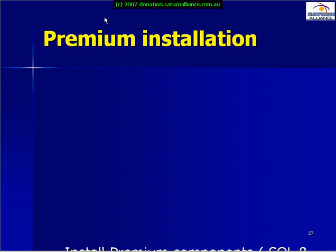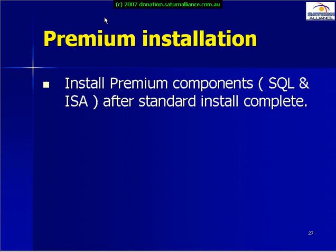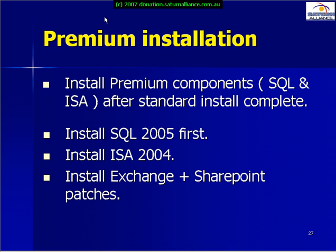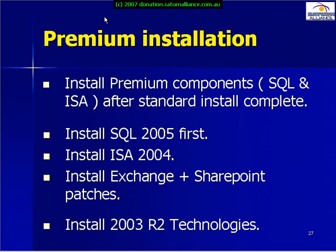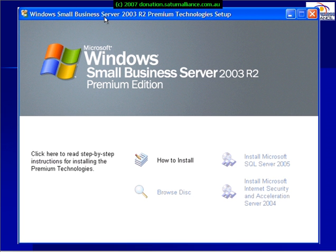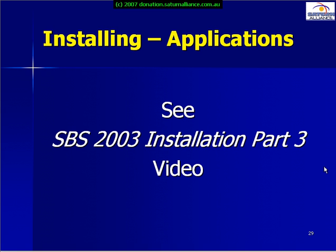If you have Small Business Server Premium, you will need to install additional components like SQL and ISA after the standard installation has completed. Install SQL 2005 first, then ISA 2004, the Exchange and SharePoint patches required as part of R2, and finally the R2 technologies, which include things like Windows Server Update Services. By inserting the premium disk, we're prompted to install SQL Server and ISA. For more information about installing these applications, see our SBS 2003 Installation Part 3 video.